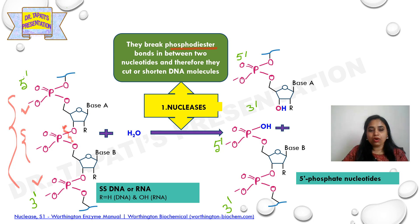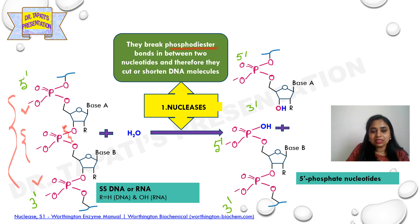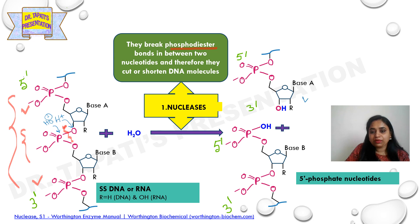There will be breakage of the phosphodiester bond, and in this case, water is involved. So the nuclease is acting on the DNA or RNA molecule in the presence of water. Water means H⁺ ion and OH⁻ ion. The H⁺ ion will attach with the oxygen group present with the sugar molecule, whereas OH⁻ will attach with the phosphate group. You will then get two products — the hydrogen coming from the water molecule and the OH group also coming from the water molecule.